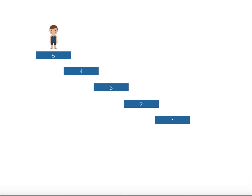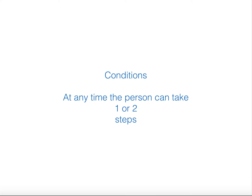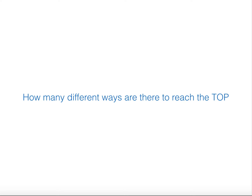We have some conditions here: at any time the person can take one or two steps. The ask is to find out how many different ways there are to reach the top. That's the question — it's a counting problem.